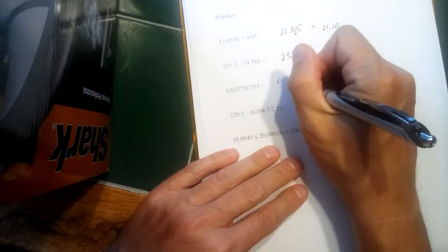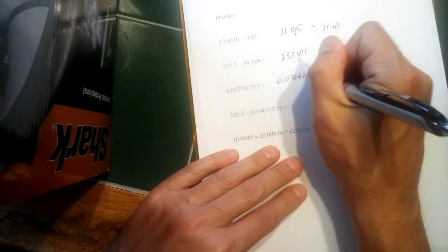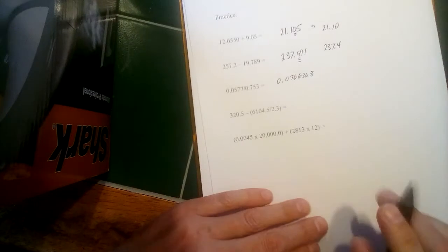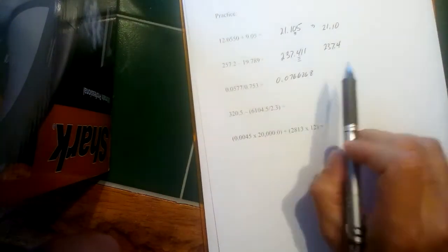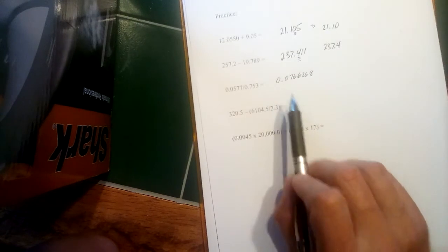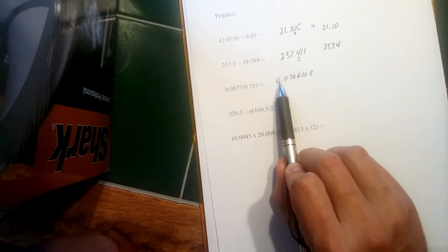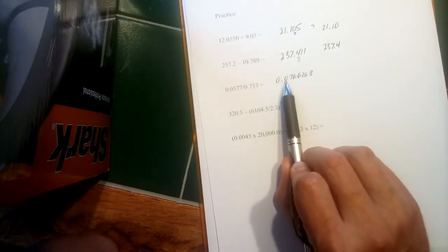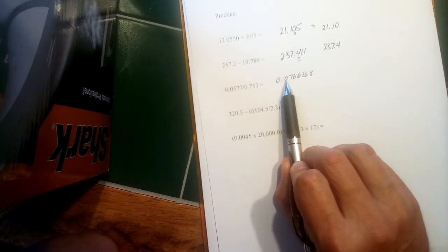So 0.0577 divided by 0.753. And calculator says 0.0766268. And actually, the calculator keeps going, but that's enough for us to figure out how to round our answer. Now, we have three significant figures.